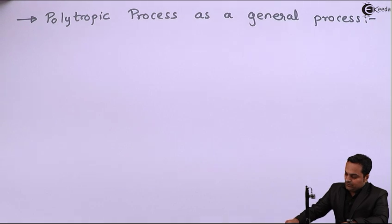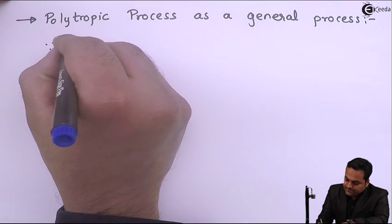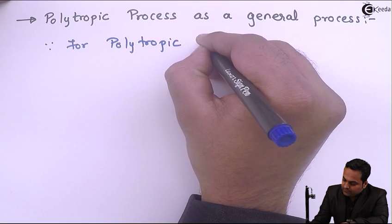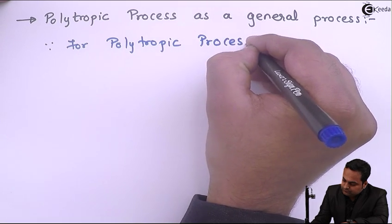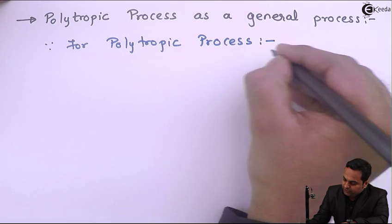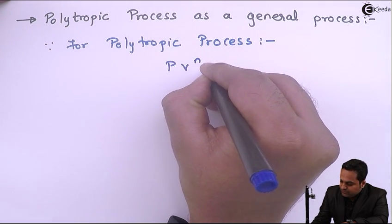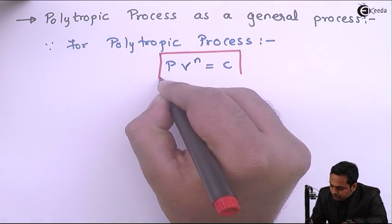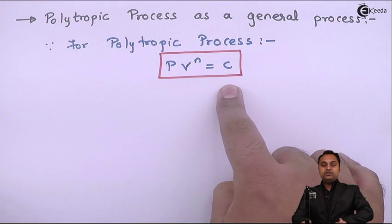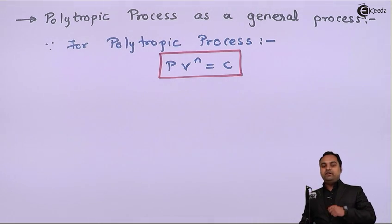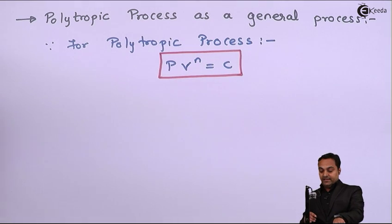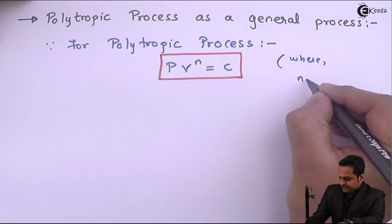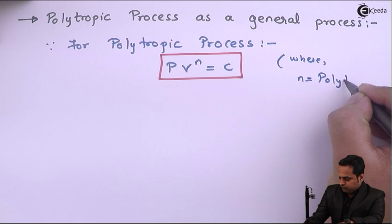Since for a polytropic process the governing law is PV raised to n is equal to constant. In this equation I will go on putting various different values of n, where n is the polytropic index, and it will have different values based on the type of process.